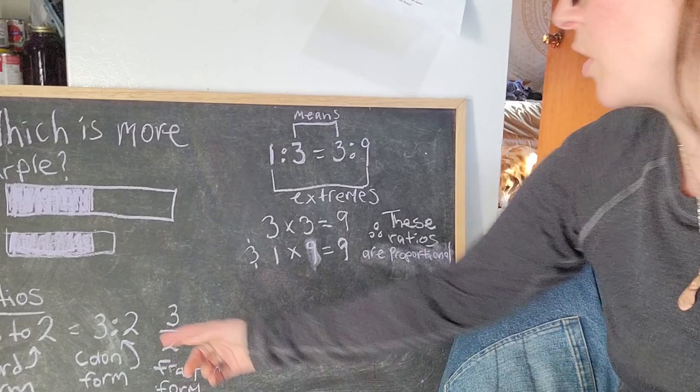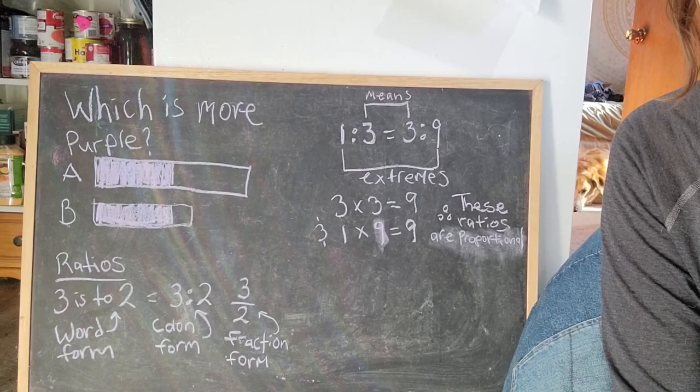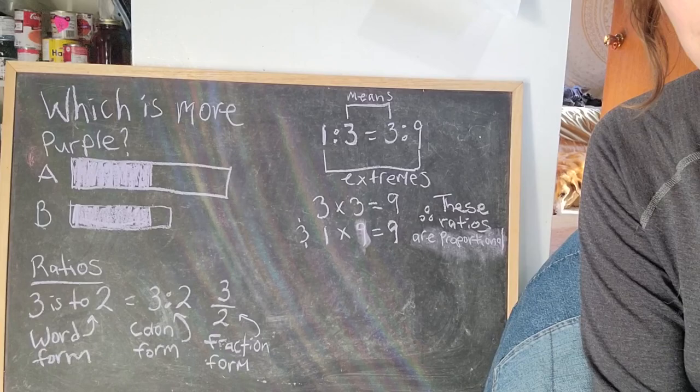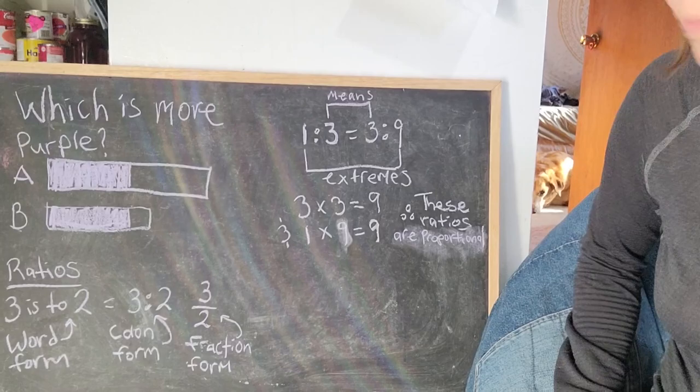Proportion, as stated before, is a statement of equality between two ratios or fractions. Something new that I learned recently is that ratios are made up of extremes, which are the outermost numbers, and means, which are the inner numbers of equivalent ratios. So in this one, one to three equals three to nine. The means are the threes, and the extremes are the one and the nine.